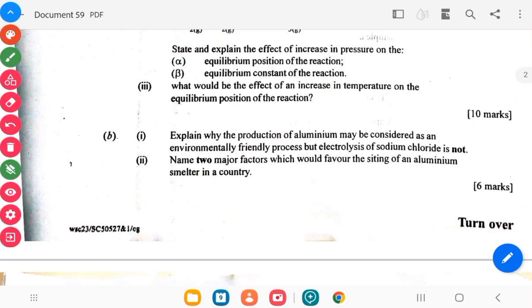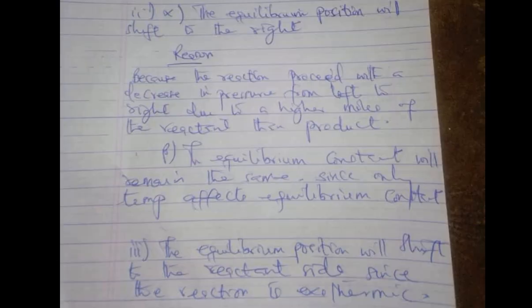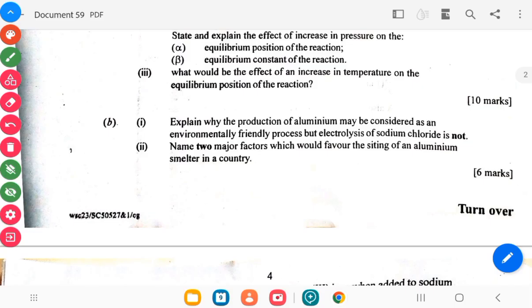What would be the effect of an increase in temperature on the equilibrium position of the reaction? B part says explain why the production of aluminum may be considered an environmentally friendly process while electrolysis of sodium chloride is not.